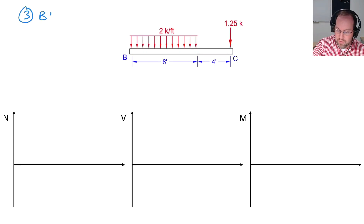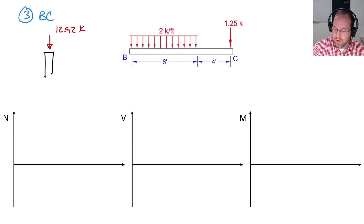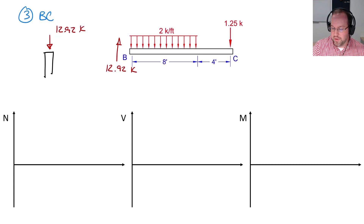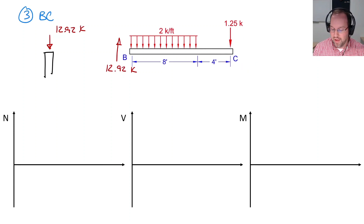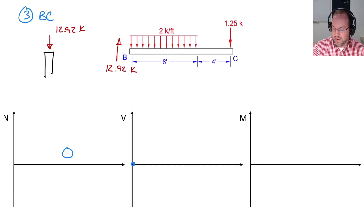Moving to free body diagram BC, the end of column AB had a force acting down of 12.92 kips, so by equal and opposite reaction, beam BC has an upward force of 12.92 kips at B, with no shear or moment carried over. For the axial diagram, there is nothing in the x direction, so there is no axial force in the beam. For the shear diagram, starting at zero, the 12.92 kip upward force gives a starting value of positive 12.92 kips.